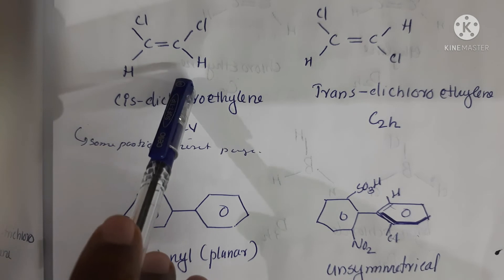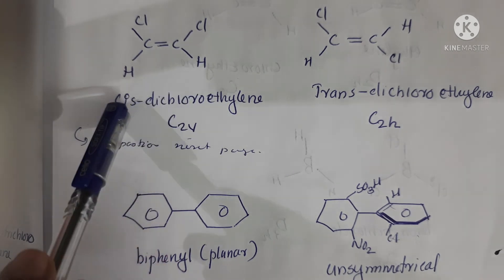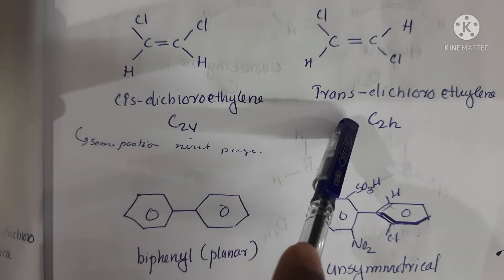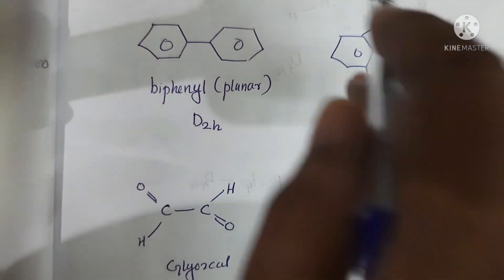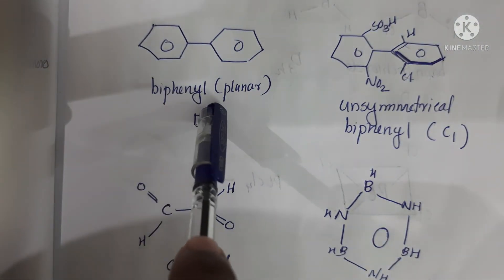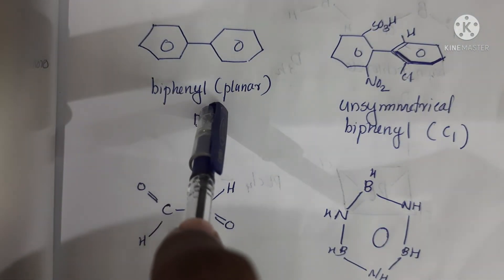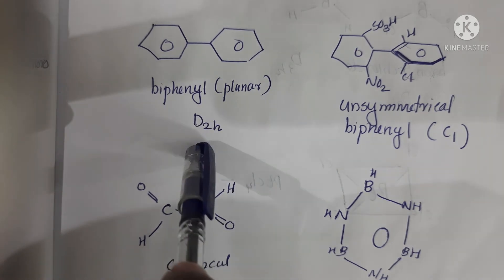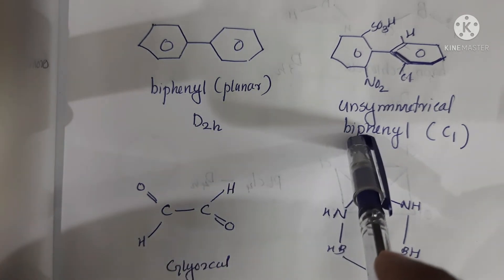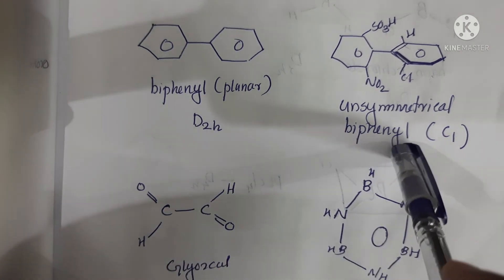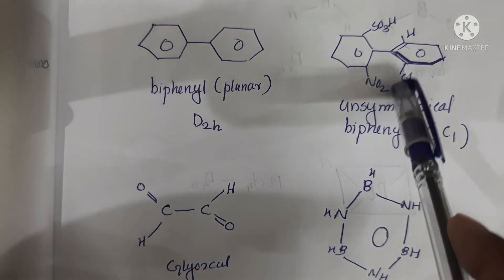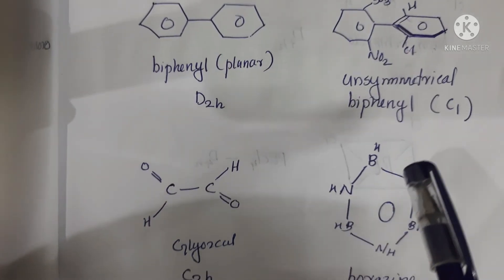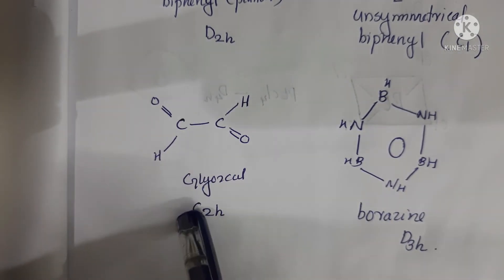Cis-dichloroethylene is C2V point group and trans-dichloroethylene is C2H. Diphenyl planar is D2H, and unsymmetrical biphenyl is C1 point group. Different disubstitutions with differing substituents also belong to the C1 point group.